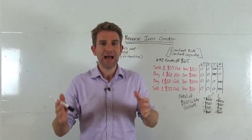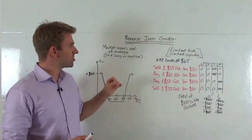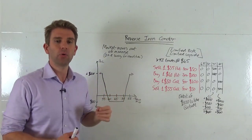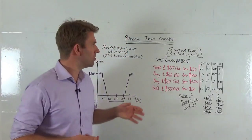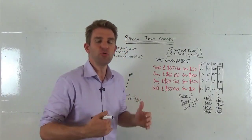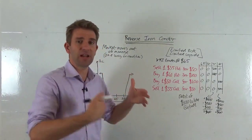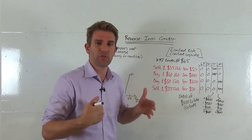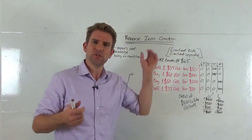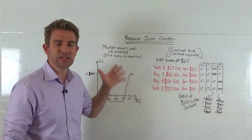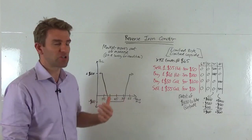We could construct a reverse iron condor, but we could just buy a put and buy a call. However, that gives us a downside that's a bit larger than what we want. So the reverse iron condor reduces the downside — it also reduces the upside potential slightly — and there is capped upside and capped downside. But that's kind of the thing with options: you either give with one hand and take away with the other. You've got to find that balance. Let's look at an example, look at a thesis, and see how it would pay out.